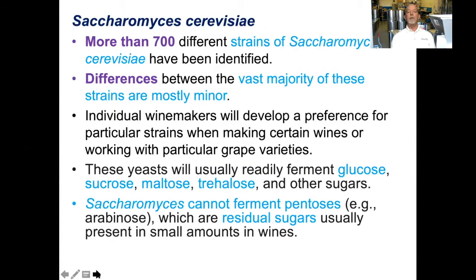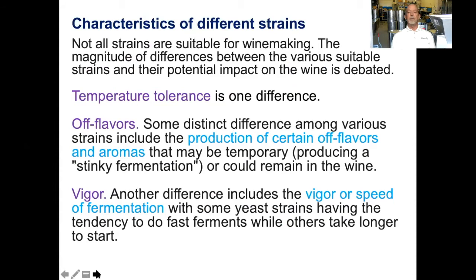There are more than 700 different strains of Saccharomyces cerevisiae, though the differences between the vast majority of these strains are mostly minor. Individual winemakers will develop a preference for a particular strain when making certain wines or working with particular grape varieties. These yeast will usually readily ferment glucose, sucrose, maltose, triolose, and other sugars, but Saccharomyces cannot ferment pentoses, which are residual sugars usually present in small amounts in wines. Not all strains are suitable for winemaking, and the magnitude of the differences between strains and their potential impact on wine is debated.